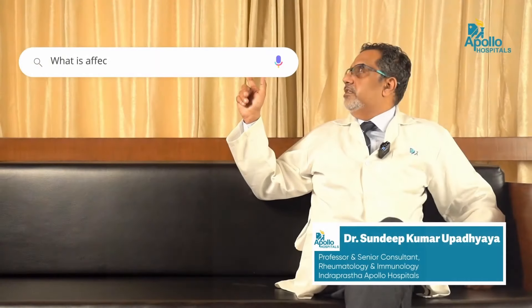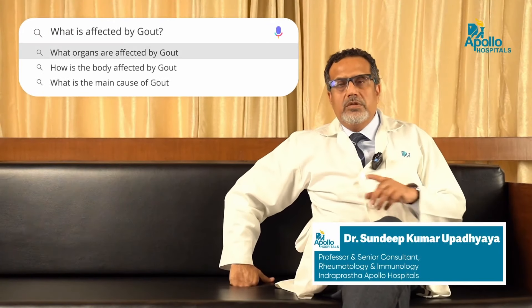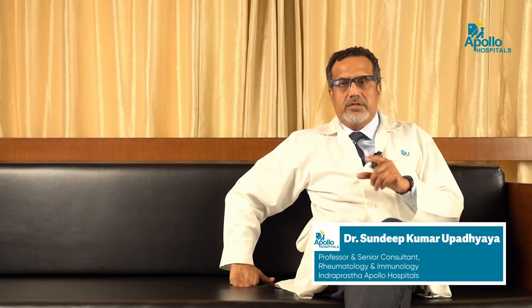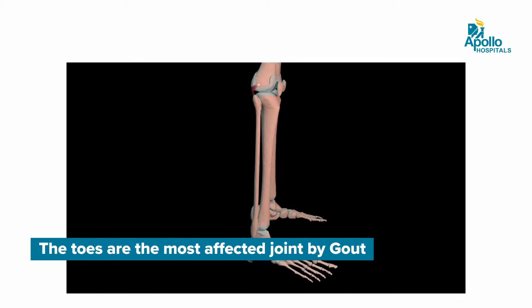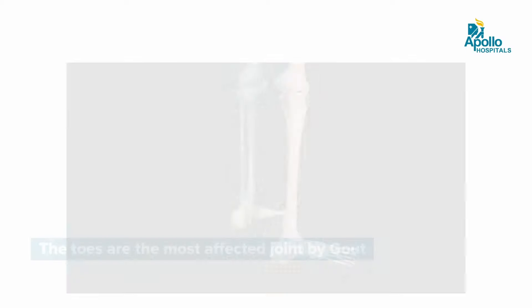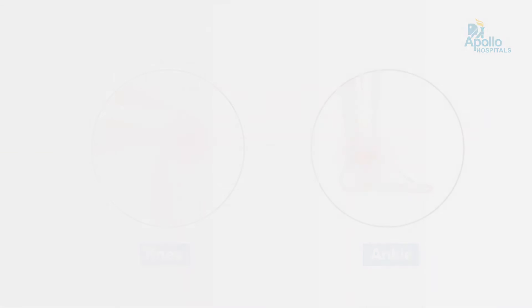What is affected by gout? The most common joint that is affected by gout is the first toe, great toe or the first MTP. Lower limb joints are the ones most affected.